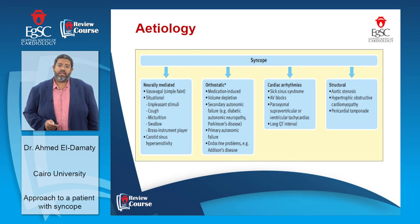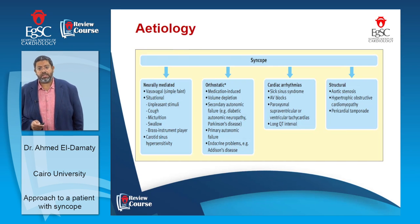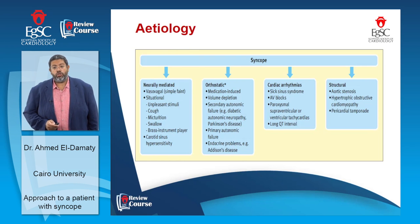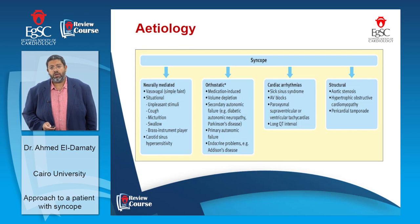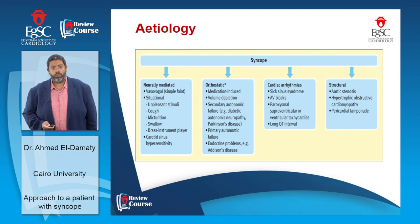Another important variant is carotid sinus hypersensitivity. A totally different category is syncope in the context of orthostatic hypotension, whether due to medications, volume depletion, or primary or secondary autonomic neuropathies. A third category is cardiac syncope, classified into cardiac arrhythmias — bradycardias or tachycardias — and structural heart disease, namely obstructive lesions such as aortic stenosis, hypertrophic cardiomyopathy, pericardial tamponade, or pulmonary embolism.